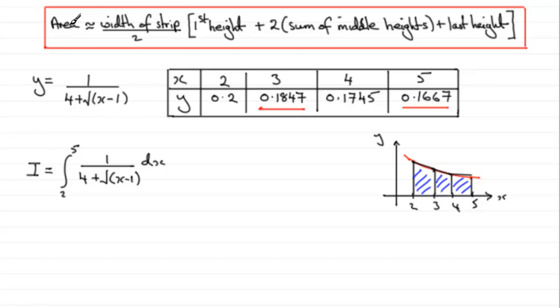But essentially we've got the area is approximately equal to half the width of a strip. Now the width of a strip will be going, in this example, from 2 to 3, 3 to 4, 4 to 5. And you can see that that width is 1 unit.